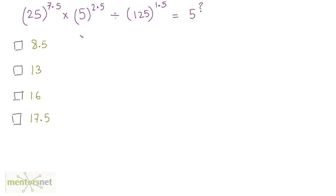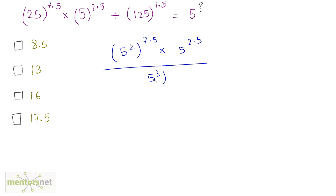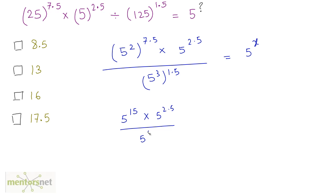This one is also a bit similar to the previous question. I can write 25 as 5 squared to the power 7.5, multiplied by 5 to the power 2.5, divided by 125, which is 5 cubed to the power 1.5, equal to 5 to the power x. So this is 5 to the power 2 times 7.5, which is 15. So 5 to the power 15 times 5 to the power 2.5, divided by 1.5 times 3, giving 5 to the power 4.5, equals 5 raised to x.